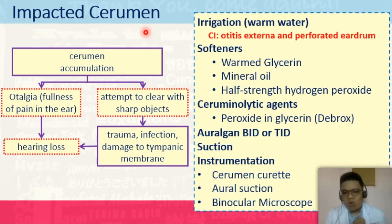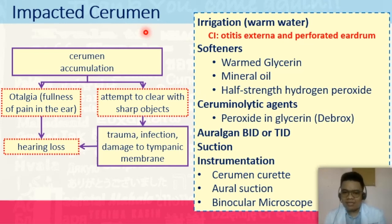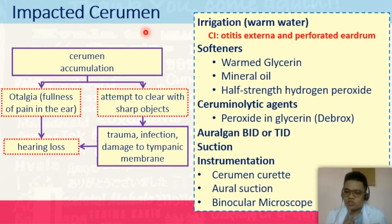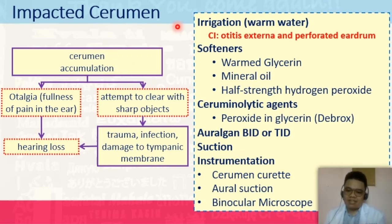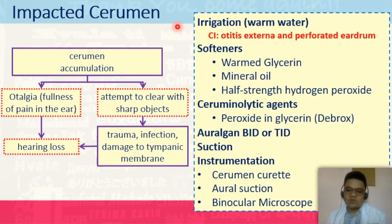Then you have Auralgan, which is also an eardrop. It is composed of antipyrine, benzocaine, and dehydrated glycerin. The antipyrine and benzocaine are analgesic and anesthetic agents, and the glycerin softens your earwax. So Auralgan is a combination of analgesic-anesthetic and earwax softener, purposed to easily remove impacted cerumen. Then you have suctioning, commonly done by doctors, and instrumentation using a curette — best done by a trained expert, preferably a doctor. Aural suctioning of your ear cavity can be done under guidance of a binocular microscope to ensure no part of the ear is further damaged.